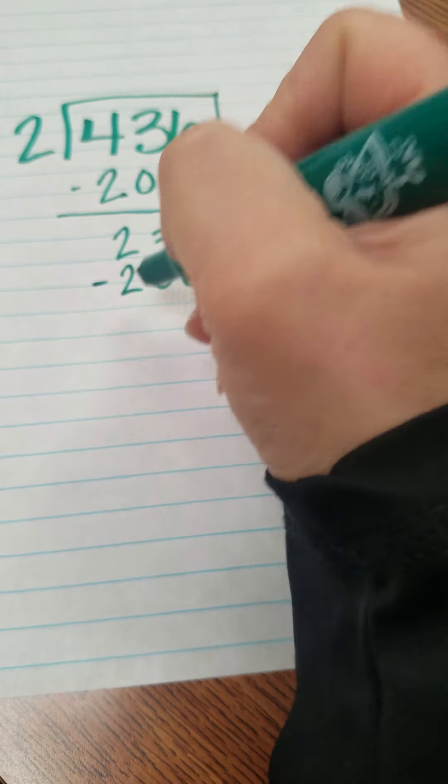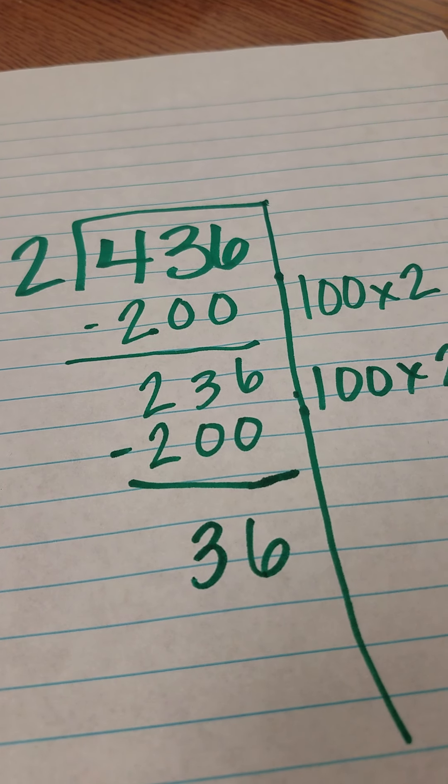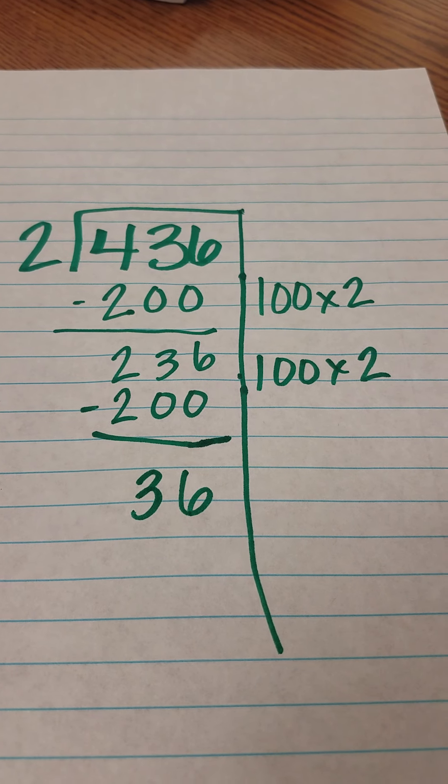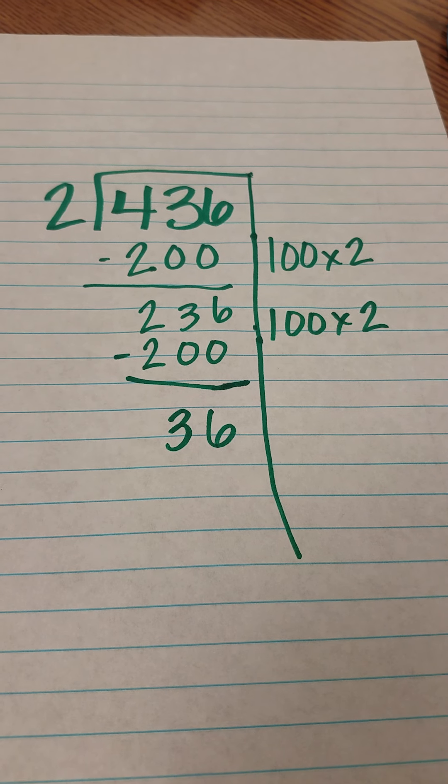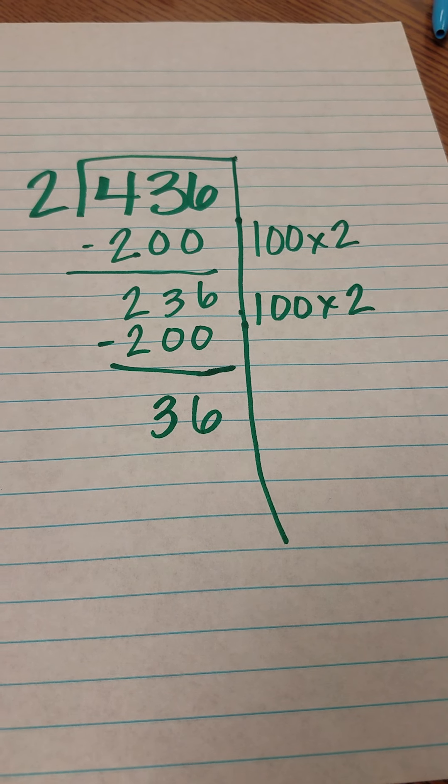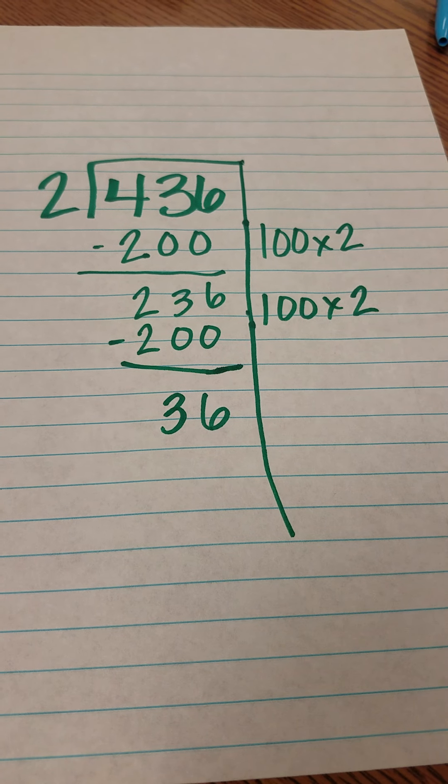And then here I have six, I just have 36 left. Well I can't do the 100 anymore, so now I can ask myself, I always like to start with 50. Can I do 50 times 2? Well 50 times 2 is 100, that's too many. So I just start thinking how many tens, groups of 10 can I do.